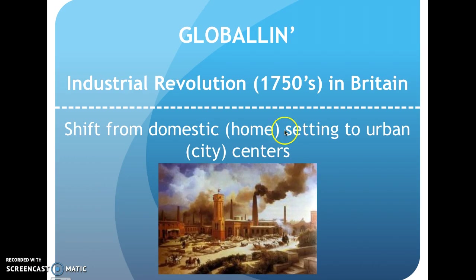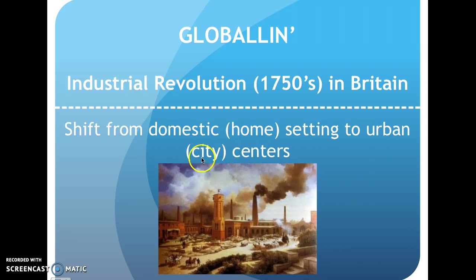The Industrial Revolution really starts in the 1750s in Britain, and the definition for the Industrial Revolution is a shift or a change — a change from the focus in the domestic sphere or the home into urban city centers. All the work and living conditions change from living in the home and the countryside, and life focuses on the city centers or the urban centers. Here's a picture of what really encapsulates industrialization, and we're going to cover all these different components.